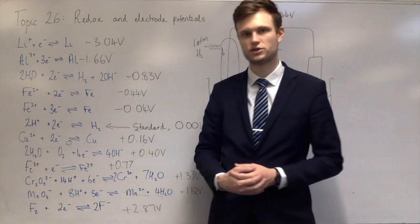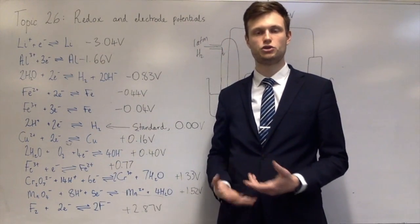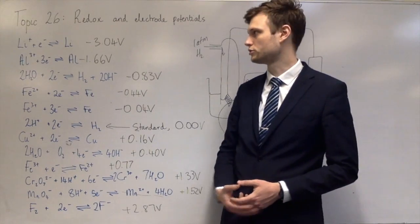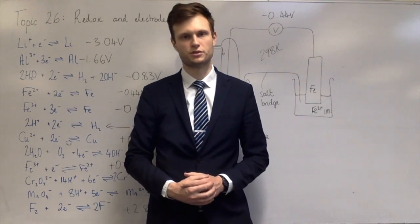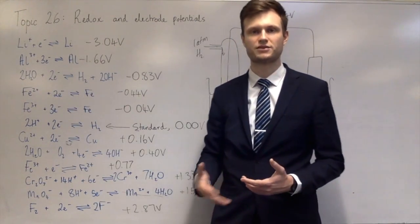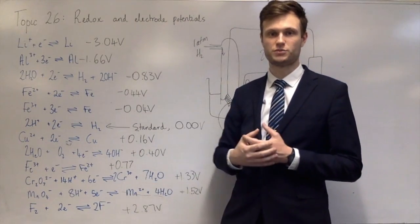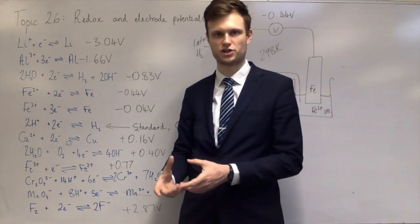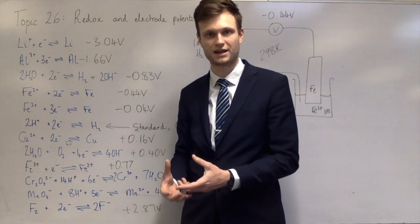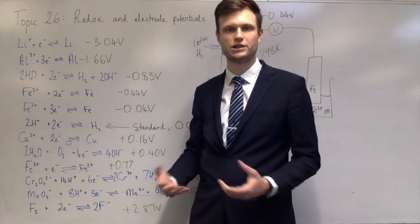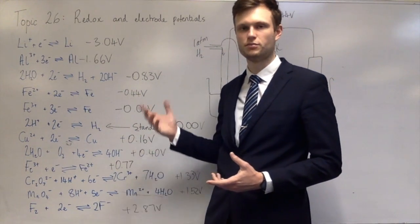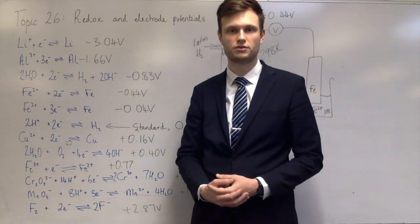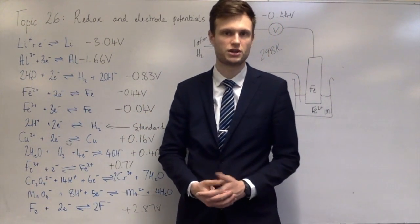Going back to the aluminium and iron example: if I used a higher concentration iron 3+ solution but kept everything else the same, the voltage of that cell would go up from 2.43 volts. Similarly, if I lowered the concentration of iron 2+, you'd get the same effect. Or you could change the concentration of the aluminium solution. These standard values are measured at a very specific temperature, pressure, and with concentrations of exactly one molar — change any of those and the numbers change.